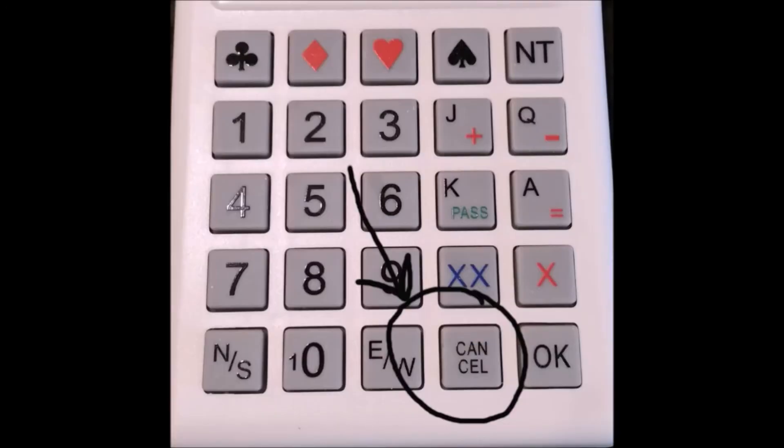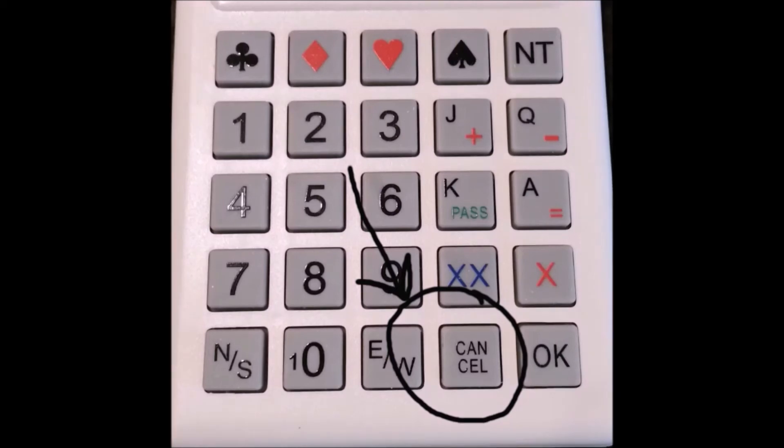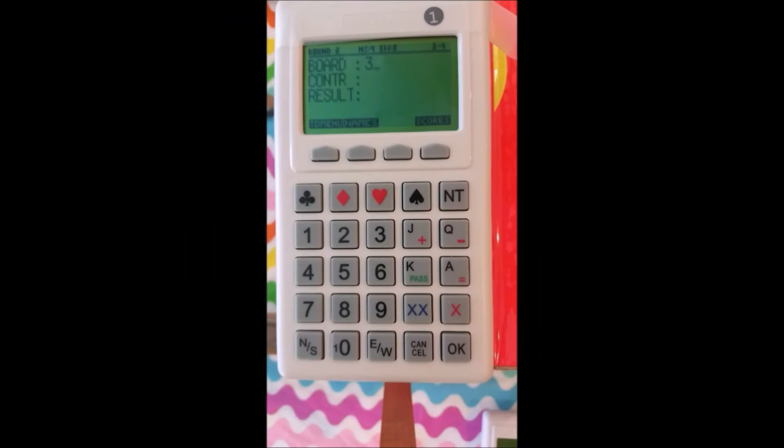Finally, let's talk about when we make a mistake and we want to go back and correct it. Many times you can do that by hitting the cancel key. The cancel key is shown here. And if you make a mistake, just hit cancel and it should take you back one step. And you can go back several steps. That's basically how you get into the system and set up the boards.